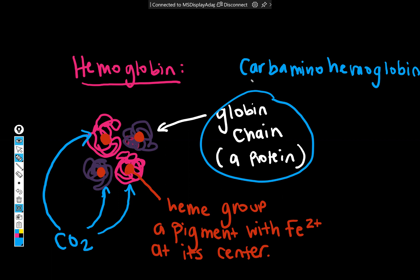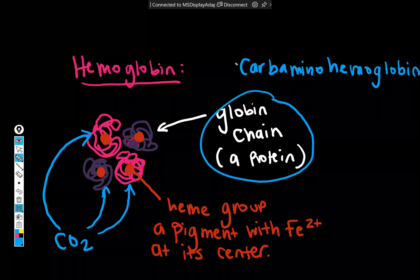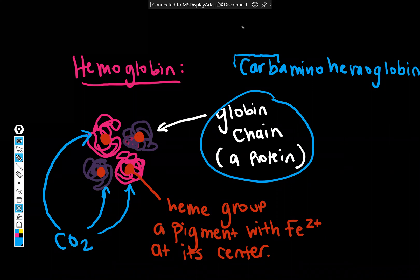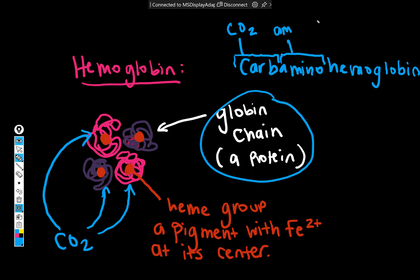So let's break that word down. Amino refers to the amino groups of the amino acids. And then, of course, hemoglobin is named for the whole molecule.